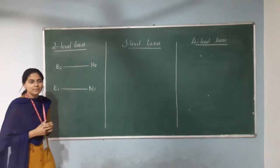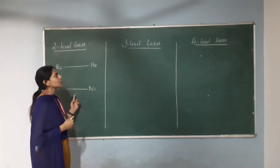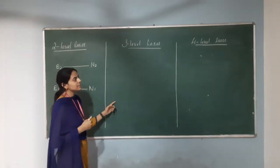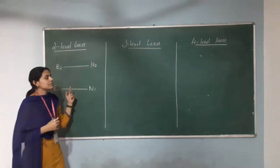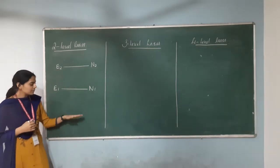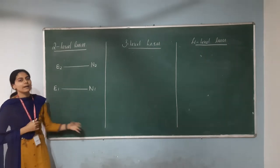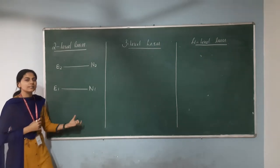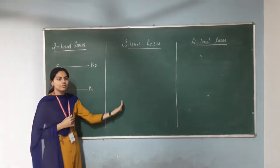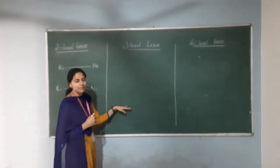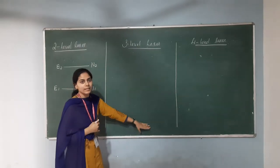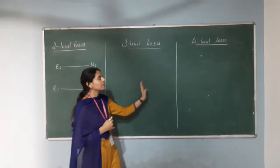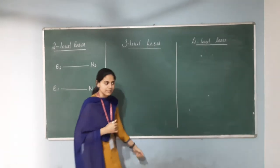There are three different pumping level schemes: the two level laser system, the three level laser system, and the four level laser system. After discussing the two level laser system, we will go to its drawbacks and how we resolve those in the three level and four level pumping schemes.